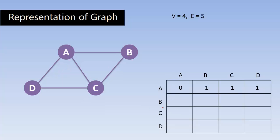Now for vertex B: B to A — there is a connection, so 1. B to B — no edge from B to itself, so 0. B to C — there is a connection, so 1. B to D — there is no direct connection between B and D, so 0.